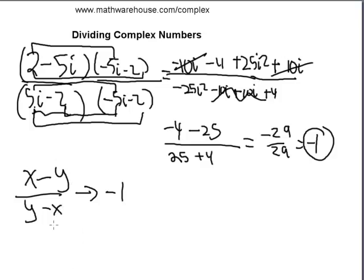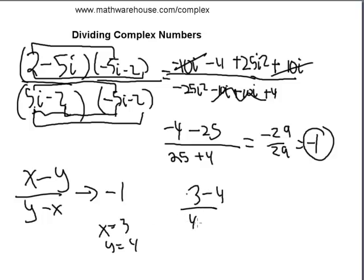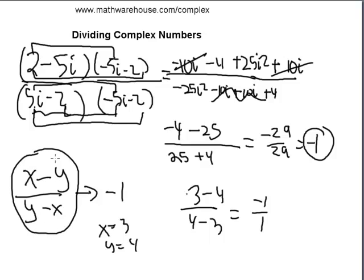This connects to a pattern from rational expressions: any expression in the form (x-y)/(y-x) always simplifies to negative 1. You can confirm this by plugging in numbers — for example x=3 and y=4 gives (3-4)/(4-3) = negative 1 over 1. This pattern always holds whether you're dealing with real numbers, rational expressions, or complex numbers.